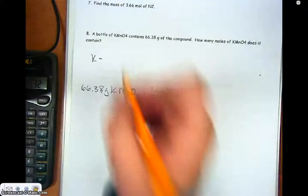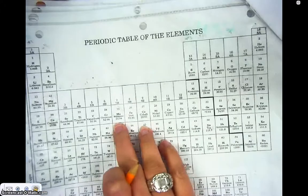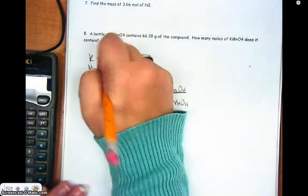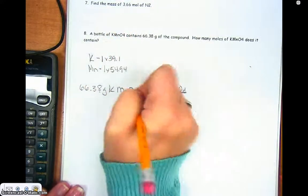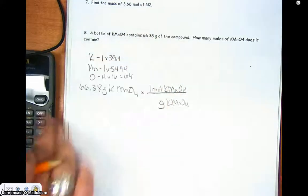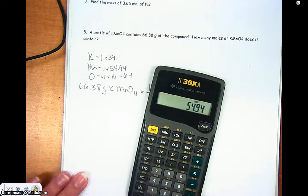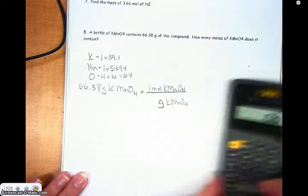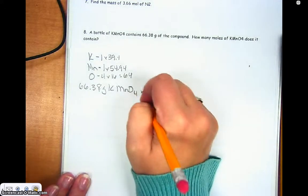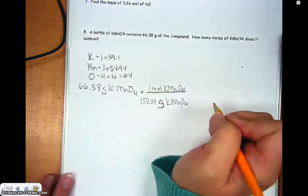So potassium, if I look there, is 39.1. I have one of them. I have one manganese. Manganese is right here, so 54.94. And then I have four oxygens, which are 16. I'm going to add all those three up. And I'm going to add 39.1 plus 54.94 plus 64 gives me 158.04. So there are 158.04 grams of potassium manganate in every one mole of potassium manganate.